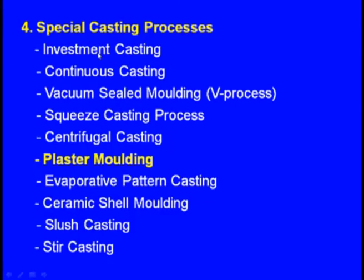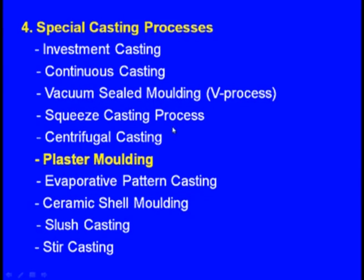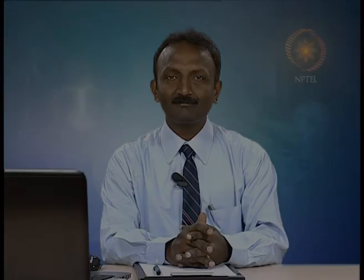Friends, today we have seen a few special casting processes: investment casting, continuous casting, vacuum sealed moulding, squeeze casting, centrifugal casting, and plaster moulding. In the next lecture, we will see evaporative pattern casting, ceramic shell moulding, slush casting, stir casting, and also the economics and overall comparison of all these processes. Thank you very much.